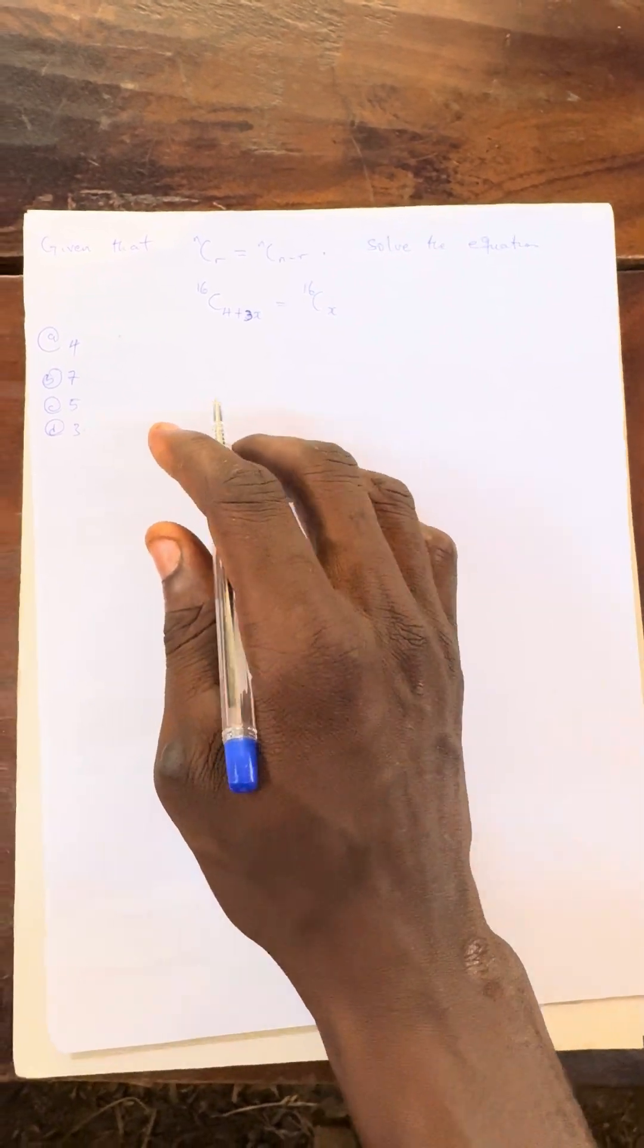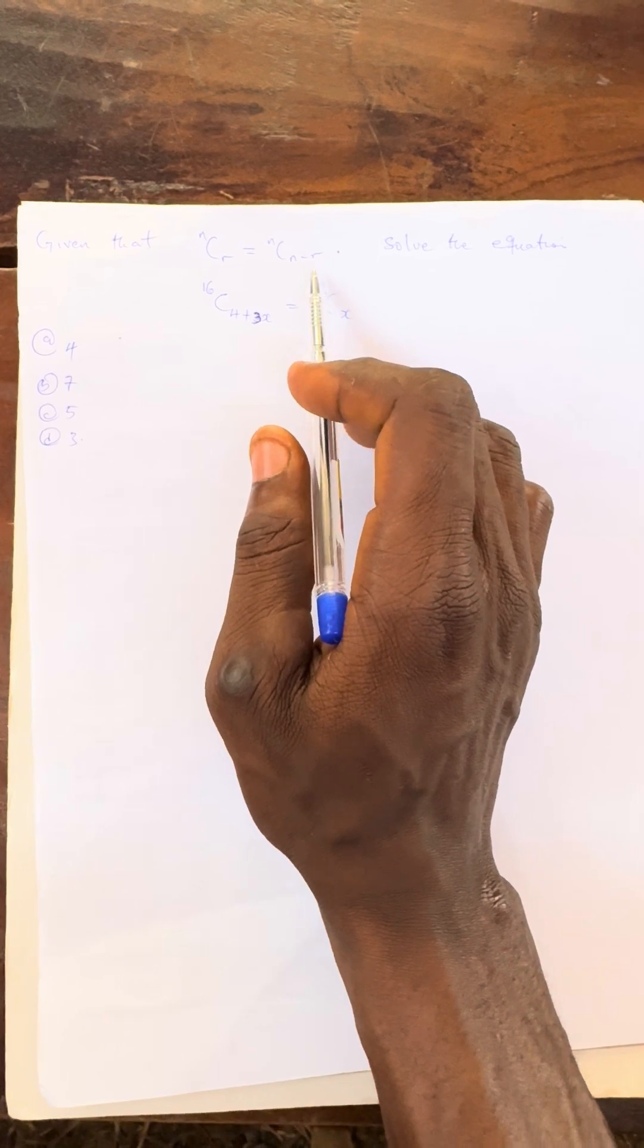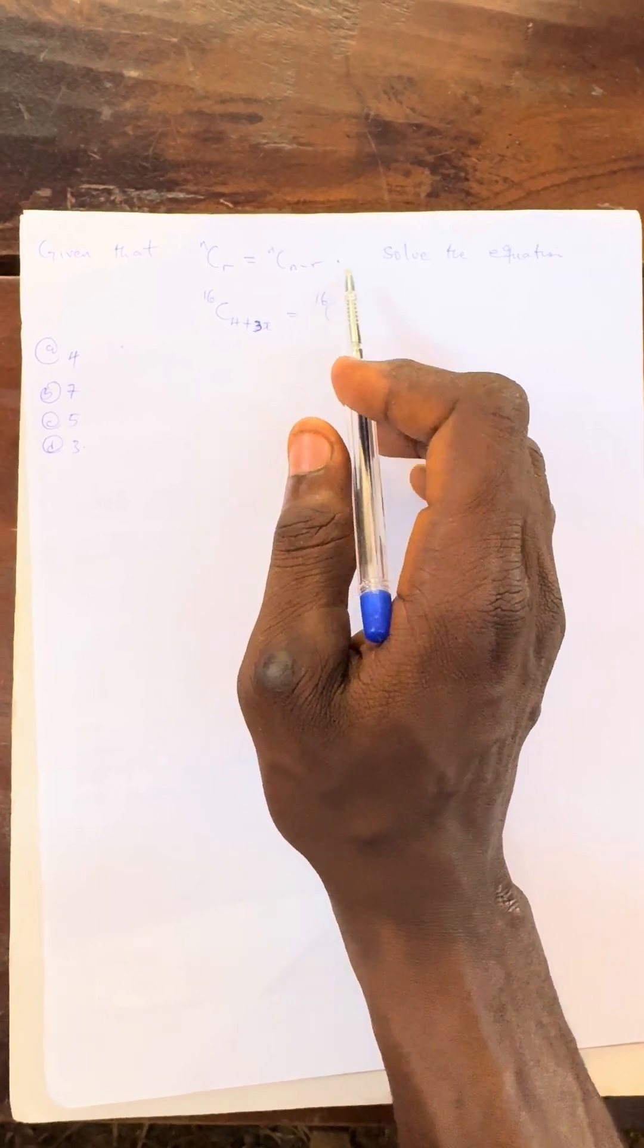Can you solve this type of question? It says given that n combination r is equal to n combination n minus r, solve the equation. The thing is this: I will use two methods. I will use the n method and at the same time I will use the calculator method.